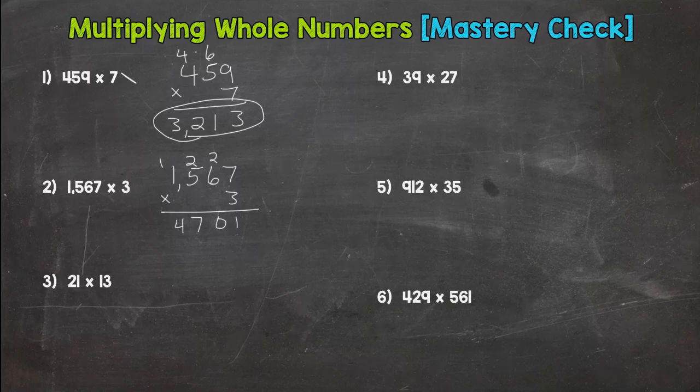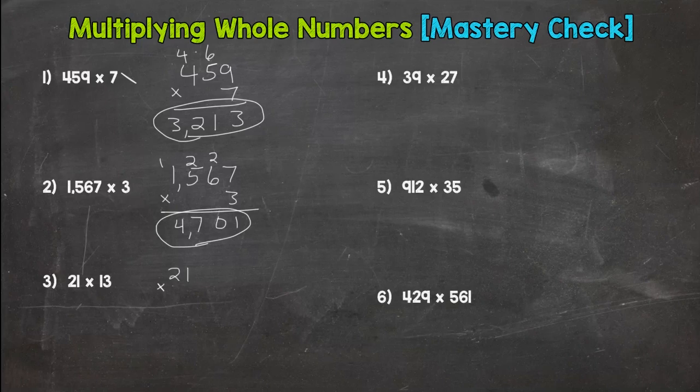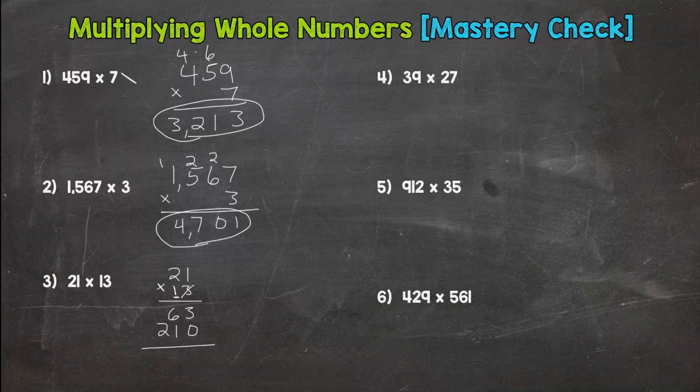Now we have a two by two, so I hope you have two partial products added together to give you your answer. On this one, you take the 3 to the 1 and the 3 to the 2. 3 times 1 is 3, 3 times 2 is 6. Done with the 3. Placeholder zero because this one's value is 10. So 1 times 1 is 1, 1 times 2 is 2. Add these guys up. 3 plus 0 is 3, 6 plus 1 is 7, and then we have a 2. So we should have 273.